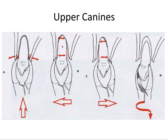Upper canines follow a similar concept: move the tooth labially, then lingually, then some rotation with apical pressure. However, canines have very long roots and the canine eminence is often adherent to the root, making it more difficult to extract. It may require a mucoperiosteal flap and a trough around the tooth to avoid removing the entire bony socket. These are things we'll talk about in the next video.